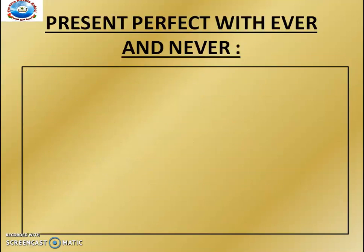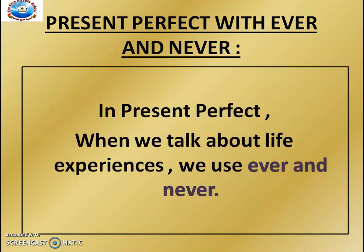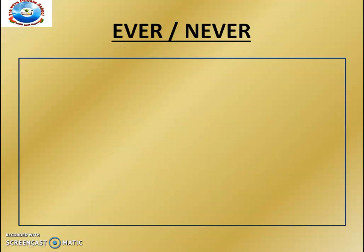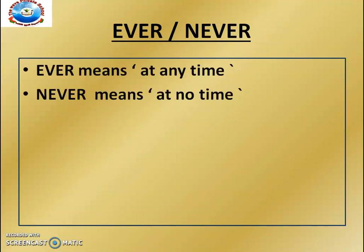Today we will learn Present Perfect with ever and never. In Present Perfect, when we talk about life experiences, we use ever and never. Ever means 'at any time.' Never means 'at no time.'